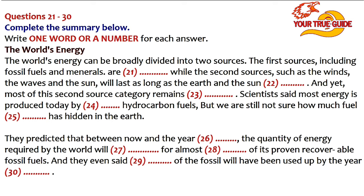The world's energy comes from a number of different sources, which may be broadly classified into two categories. The first, which includes fossil fuels and minerals such as oil, coal, natural gas, and uranium, comprises sources of energy that are non-renewable. The second category, which includes the wind, the waves, the tides, the temperature of the oceans, and the sun, comprises sources that will continue to provide energy in virtually unlimited quantities as long as the earth and the sun exist. And yet, despite the fact that they are, to all intents and purposes, inexhaustible, the sources of this second category remain almost untapped.